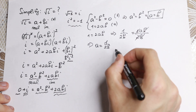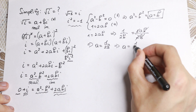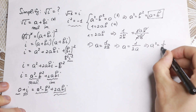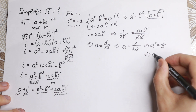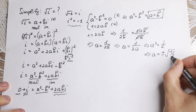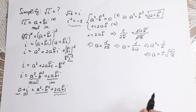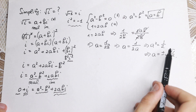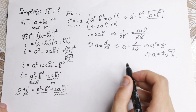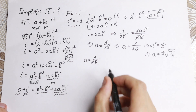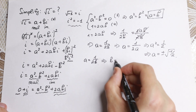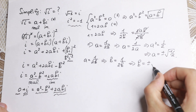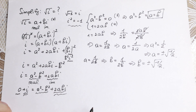Moreover, since a = b, we can substitute b for a in a = 1/(2b), giving us a = 1/(2a). Cross-multiplying yields a² = 1/2. Therefore a = ±√(1/2). And since a = b, we also have b = ±√(1/2). Both a and b take the same value.